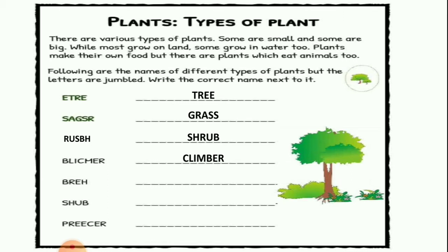Next is B-R-E-H. Which type of plant is this? It is herb. Write the answer: H-E-R-B. Herb.